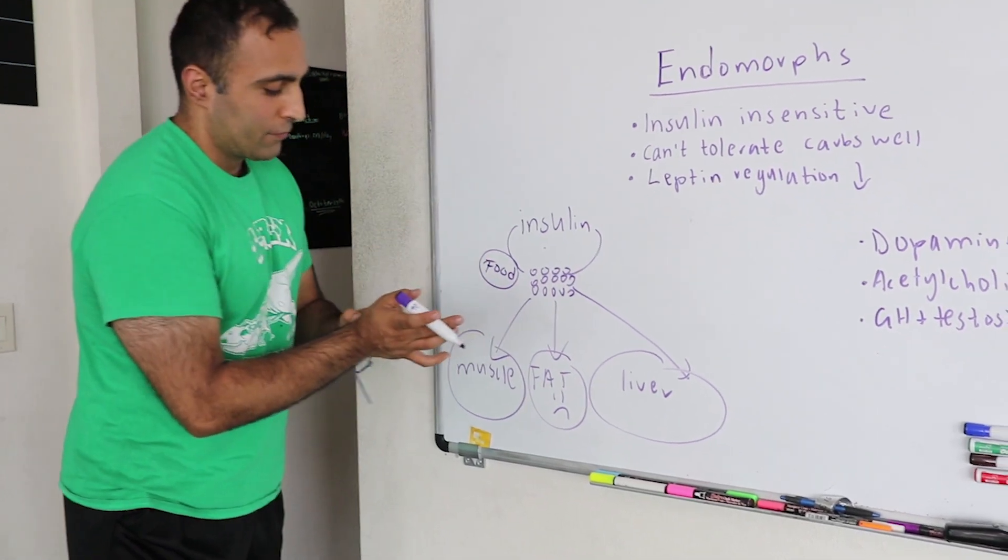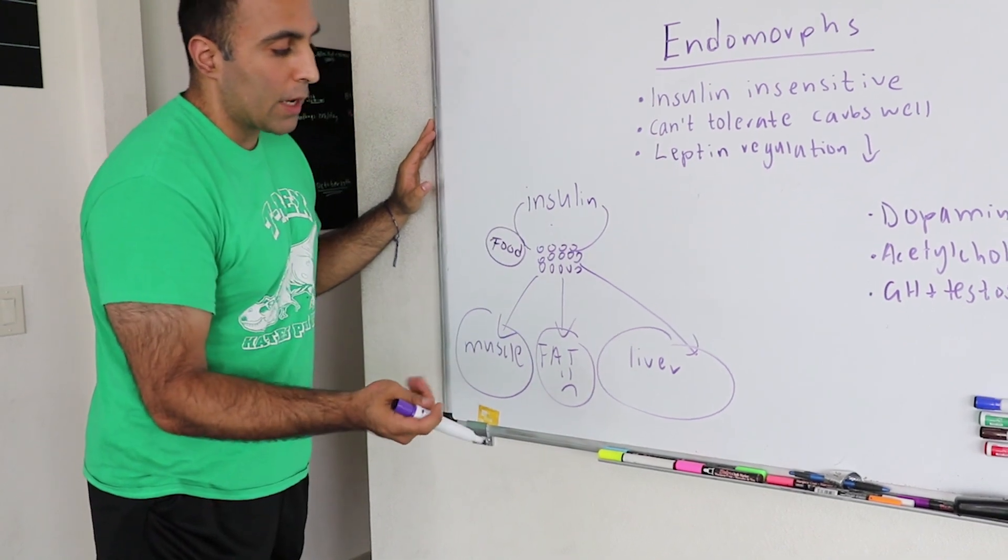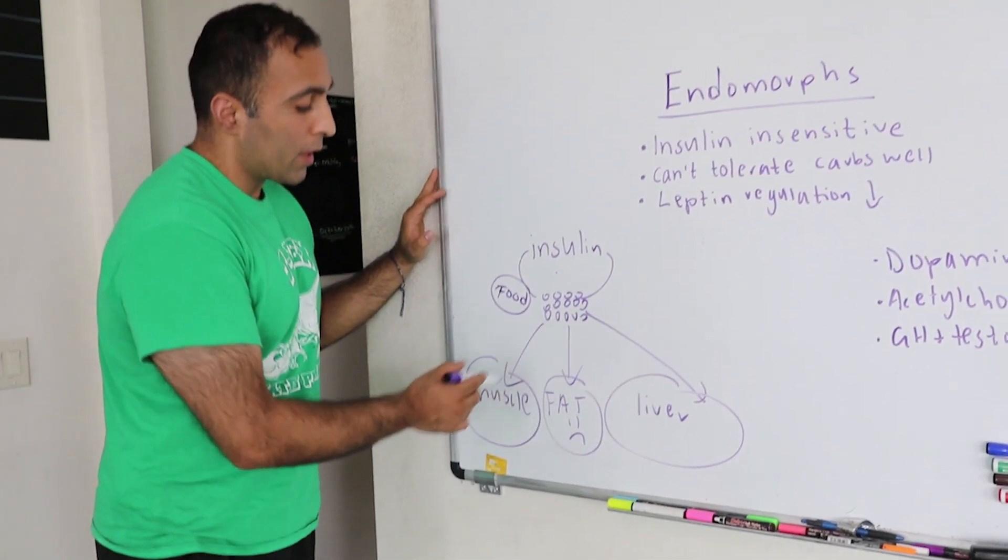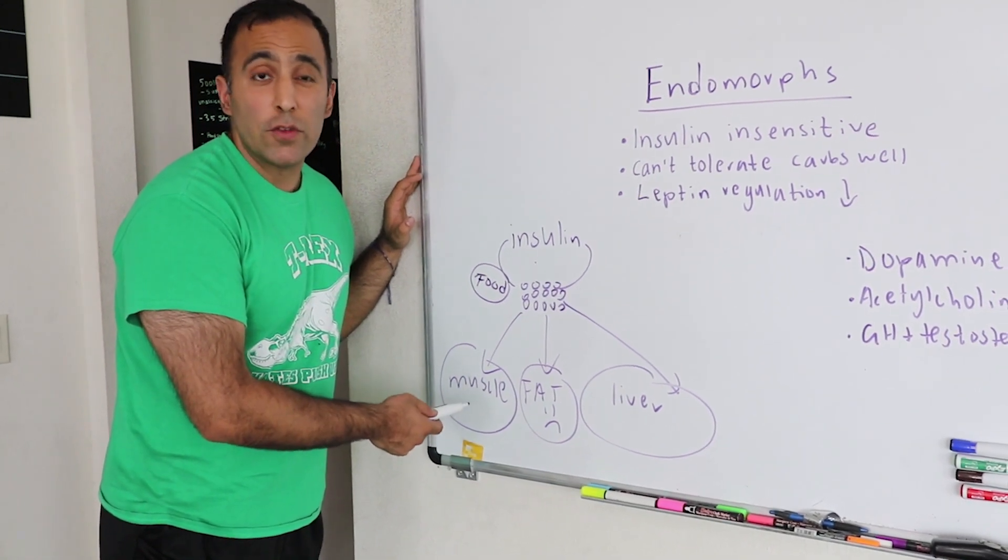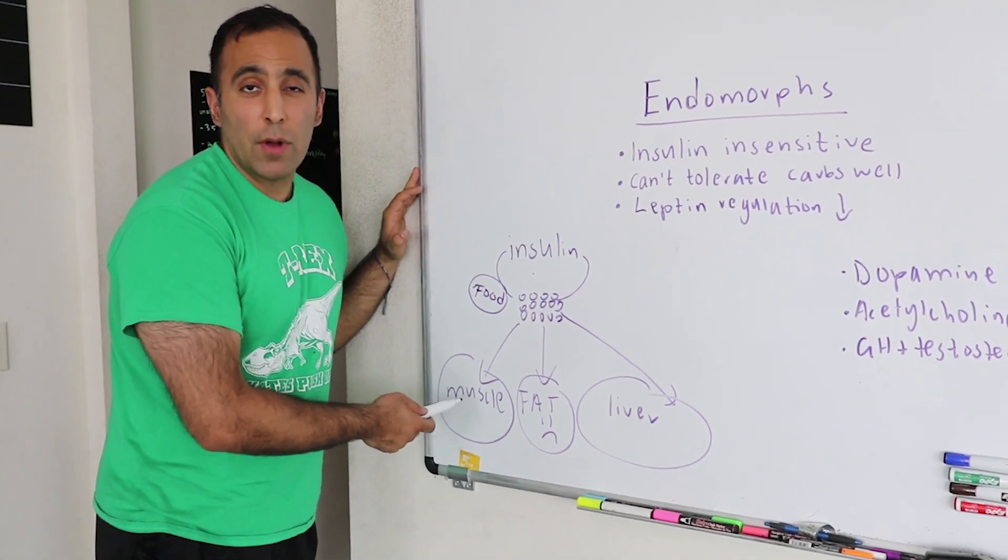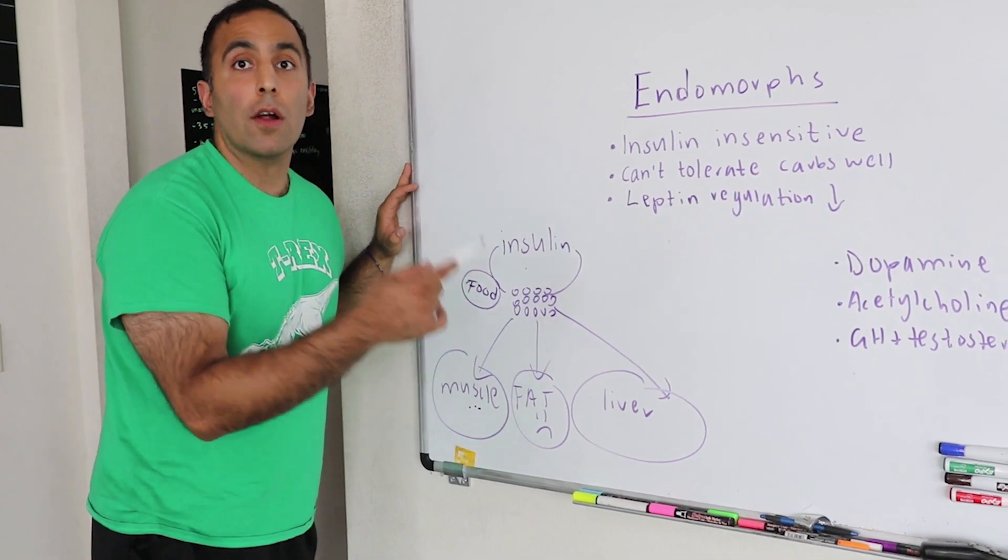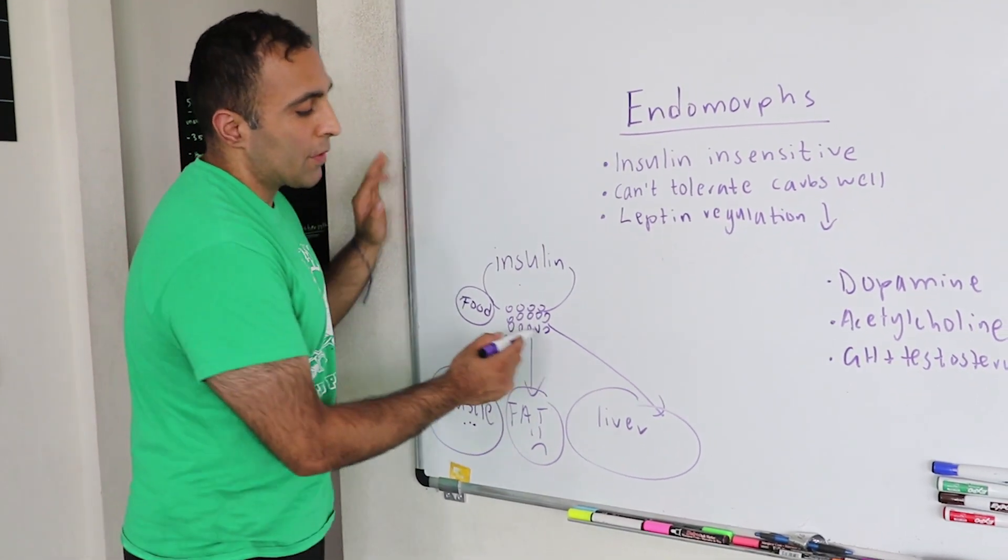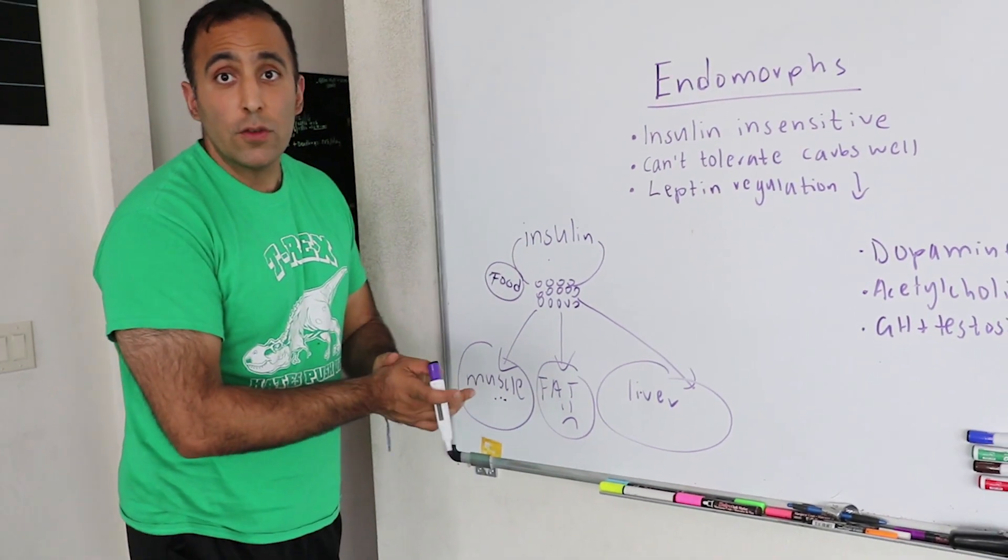So a little picture over here: insulin takes your food stuff, these little balls here representing your food for lack of artistic creativity, and takes your food into a couple different areas. Hopefully we take most of the food and put it into our muscle if we stimulate the muscle enough with strength training and time the nutrients properly. It should all go into this wonderful place so we can recover, get stronger, and build muscle. Some of the rest goes to your liver for storage so we can utilize it if we need to during the workout.